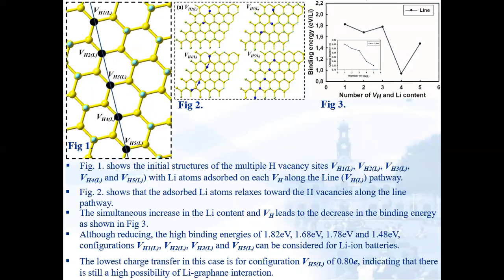We further studied the influence of multiple hydrogen vacancies and increasing lithium content along the line pathway on the binding energies and charge transfer. Fig-1 shows the initial structure of the multiple hydrogen vacancy sites VH1, VH2, VH3, VH4, and VH5, with lithium atoms adsorbed on each hydrogen vacancy along the line pathway. Fig-2 shows that the adsorbed lithium atoms relax towards the hydrogen vacancies along the line pathway. The simultaneous increase in lithium content and hydrogen vacancies leads to a decrease in binding energies as shown in Fig-3, although remaining high at 1.82 eV, 1.68 eV, 1.78 eV, and 1.48 eV. Configurations VH1, VH2, VH3, and VH5 along the line pathway can be considered for lithium-ion batteries. The lowest charge transfer is for configuration VH5 at 0.80 electrons, indicating that there is still a high possibility of lithium-graphane interaction.